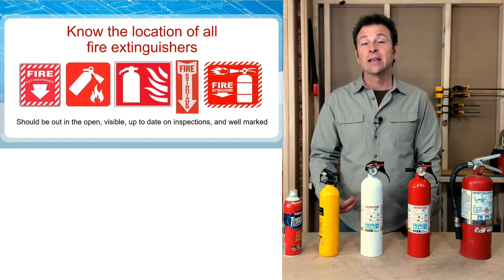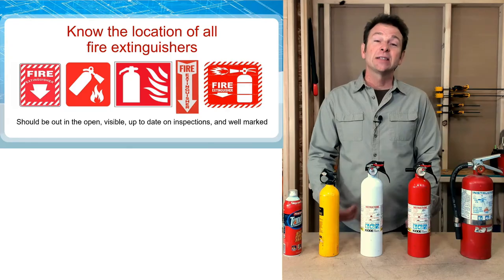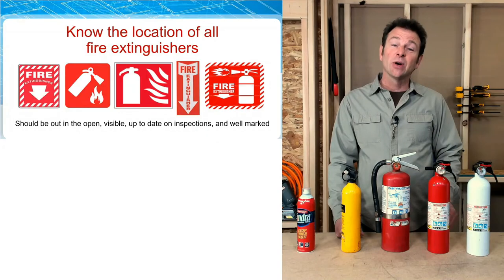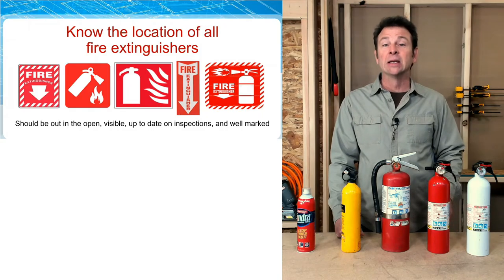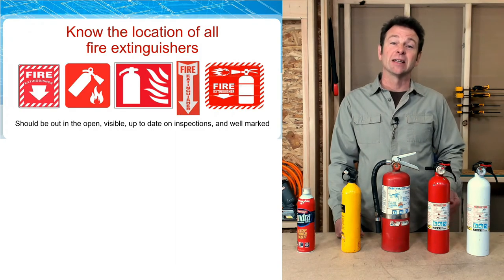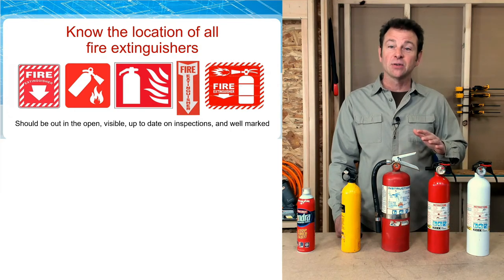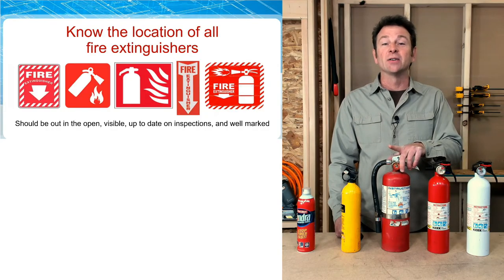Now that we've talked about the elements of fire and certain fire hazards on the job, let's talk about what to do about it, starting with fire extinguishers and knowing where to locate them. By law, fire extinguishers need to be well marked, well placed — especially in a commercial building — and they should be convenient to us at the moment we need to use them. Here I have several fire extinguishers, and you can see the universal symbol for fire extinguishers on the presentation.